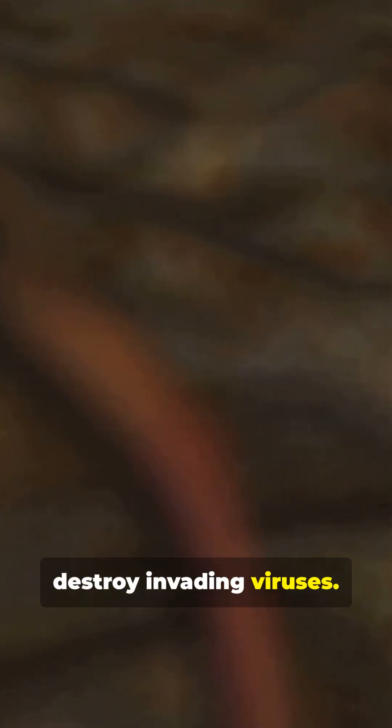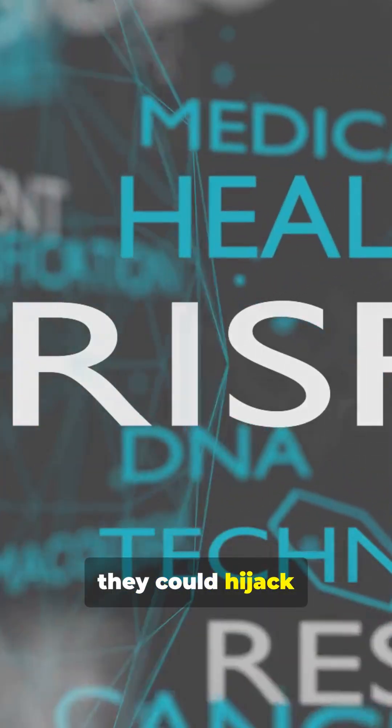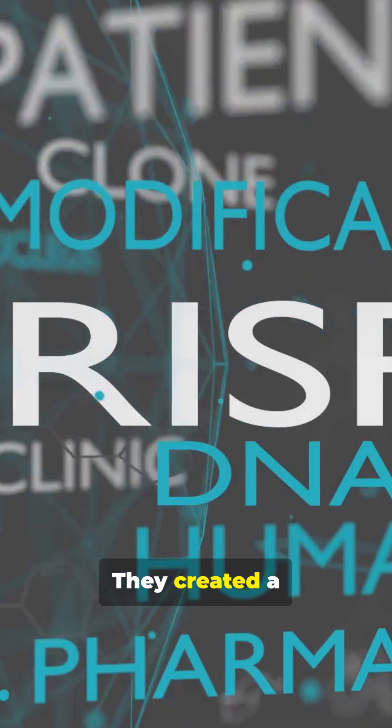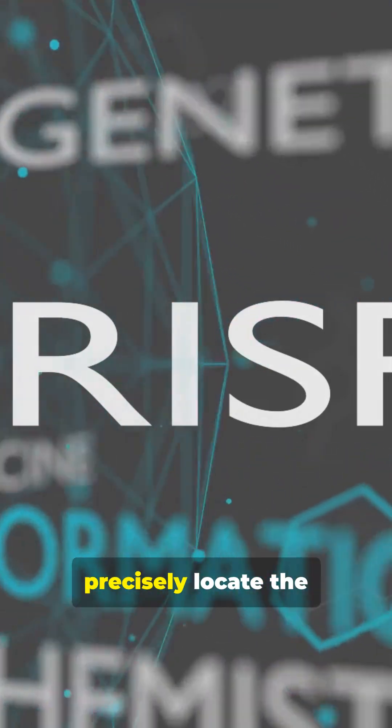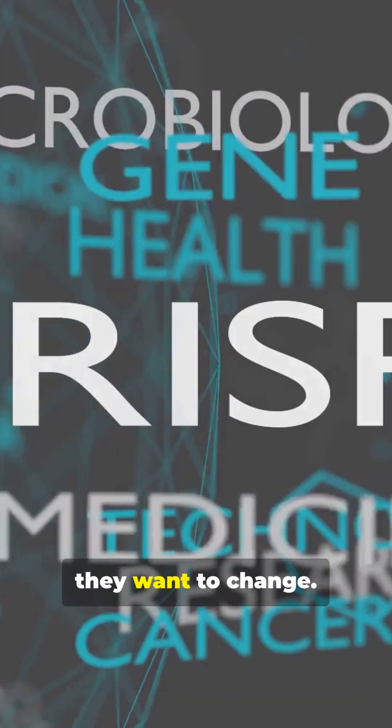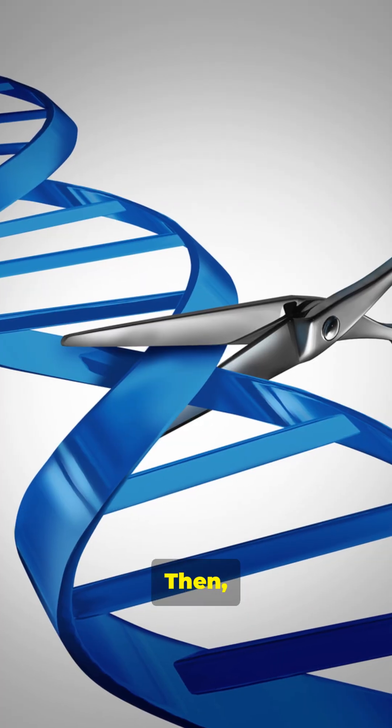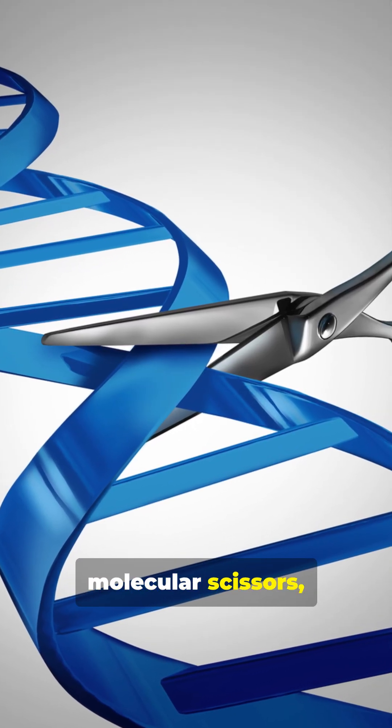Scientists realized they could hijack this system. They created a guide RNA, like a microscopic GPS, to precisely locate the target DNA sequence they want to change. Then the Cas9 enzyme, often called the molecular scissors, is delivered to the spot.